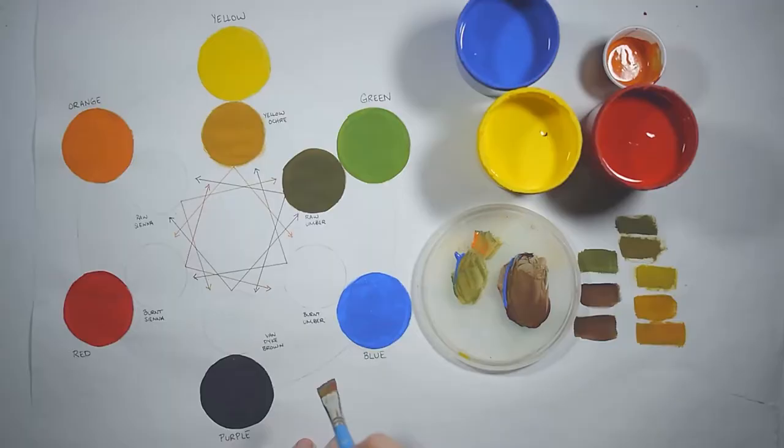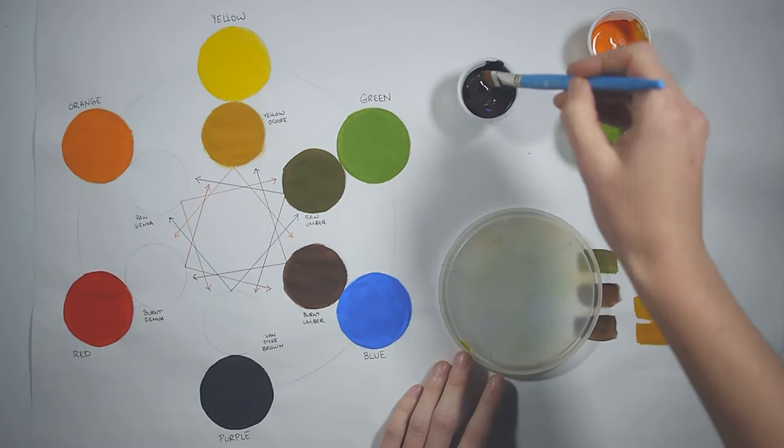Van Dyke brown is a very purple color, so adding just a little bit of orange and green creates a fairly accurate color.